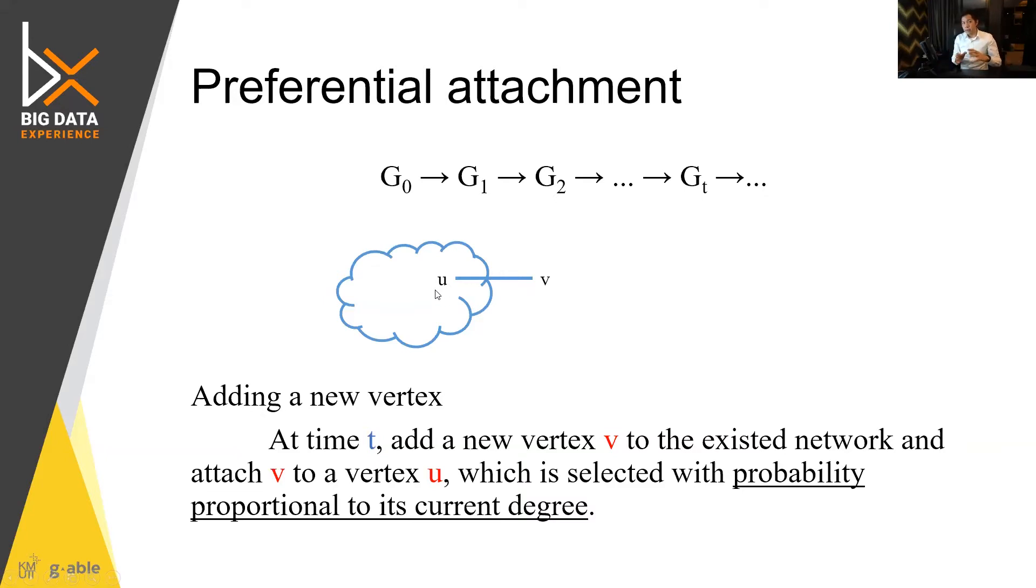But instead of in the first example, in the first example, each node would have equal degree, equal probability to be attached to. But this time,